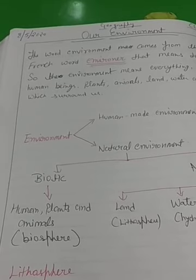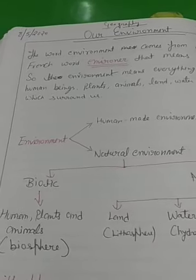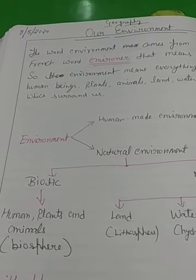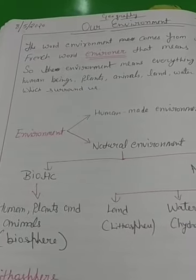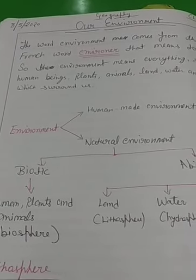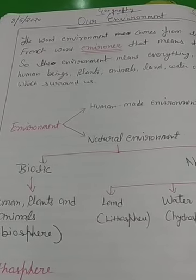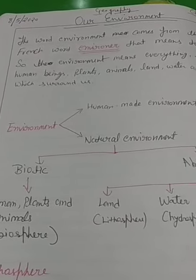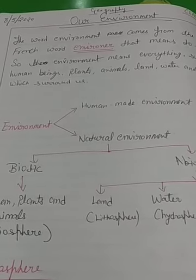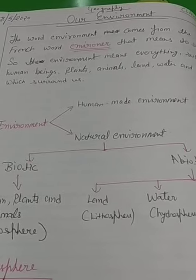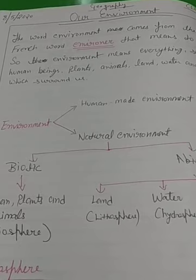In this chapter we will learn about our environment and the components of the environment. First of all we will learn about the environment — what is environment? In the previous class you have studied about our earth as the unique planet of the solar system. It is called so because of the presence of life on it. We all live on the earth. Here we will find everything that we need to live, such as water, air, land, food, etc.